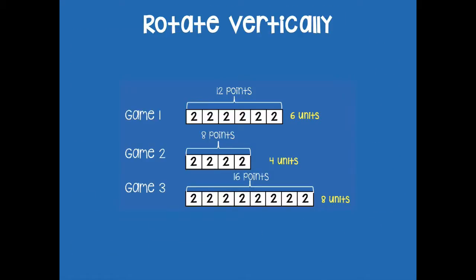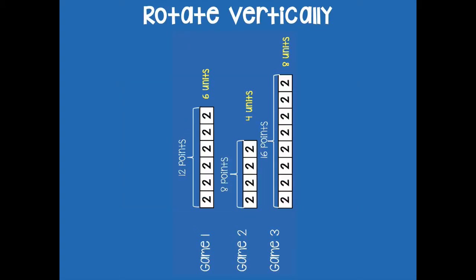Now I've cleaned up the problem a bit. We talked about how we're used to drawing tape diagrams horizontally from side to side. Now I want to rotate them vertically so they go up and down. And look — now my tape diagram goes vertically, up and down.